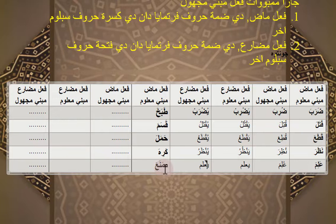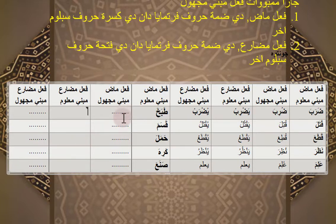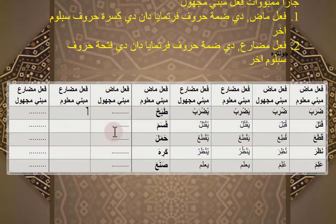Saya kira itu, mudah-mudahan kamu semua bisa paham. Selanjutnya saya ingin membuat satu latihan. Latihannya ini ada fi'il mazi mabni maklum: Tobaho, Kosama, Hamalah, Kariha, Sona'a. Tobaho artinya memasak — kalau dibuat 'dimasak' atau dijadikan Majul itu bagaimana? Kosama menjadi apa? Hamalah maklum, majulnya seperti apa? Kariha mabni maklum, mabni majulnya seperti apa? Sona'a mabni maklum, kemudian mabni majulnya bagaimana?